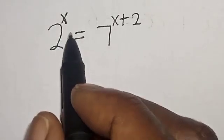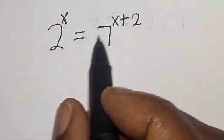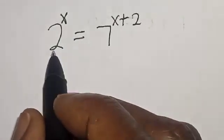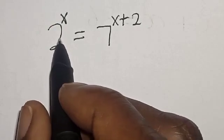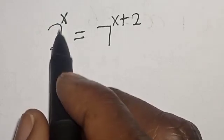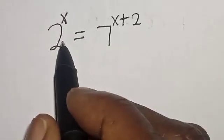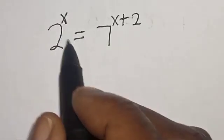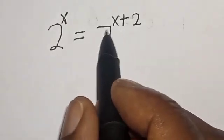Hi everyone, welcome to my class. In this class we want to find the value of s from this given equation: 2 raised to power s is equal to 7 raised to power s plus 2.